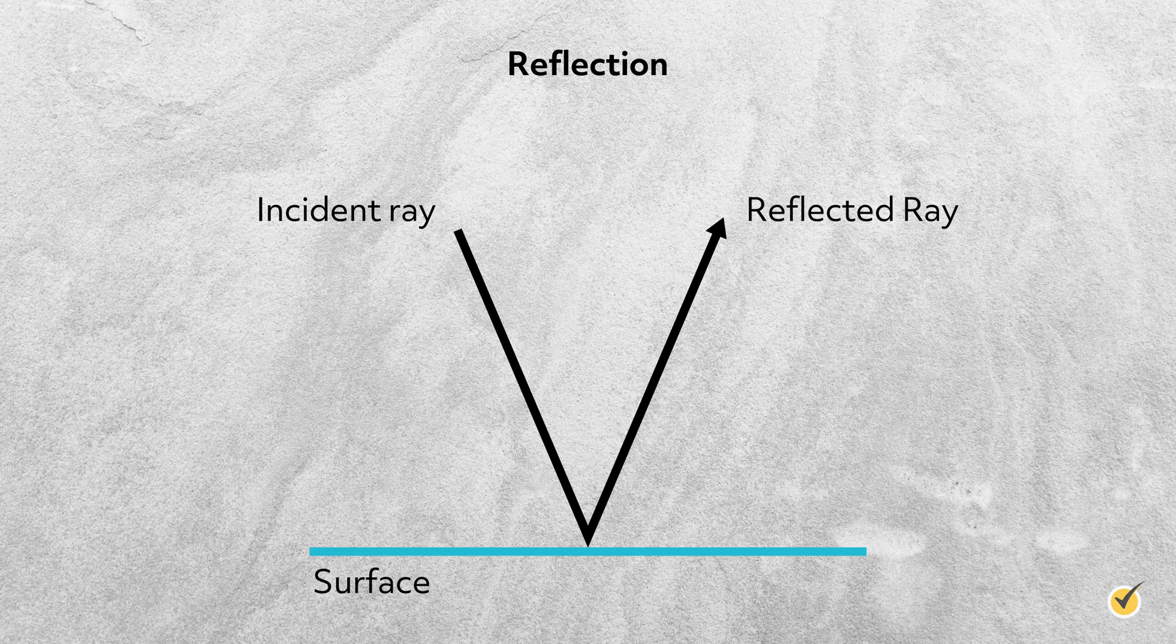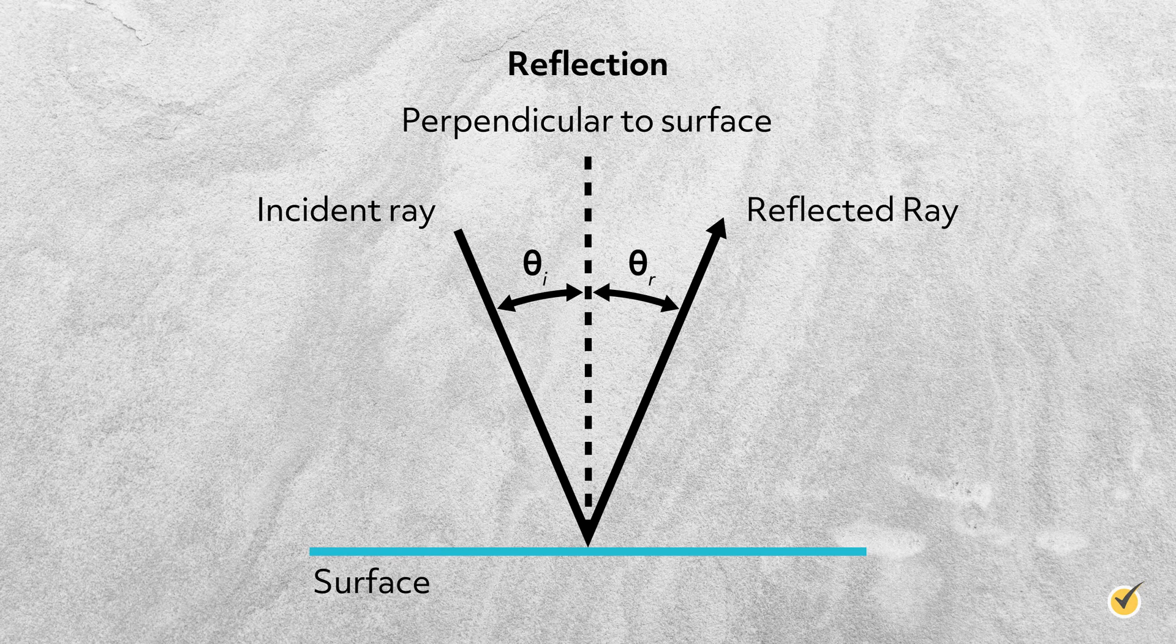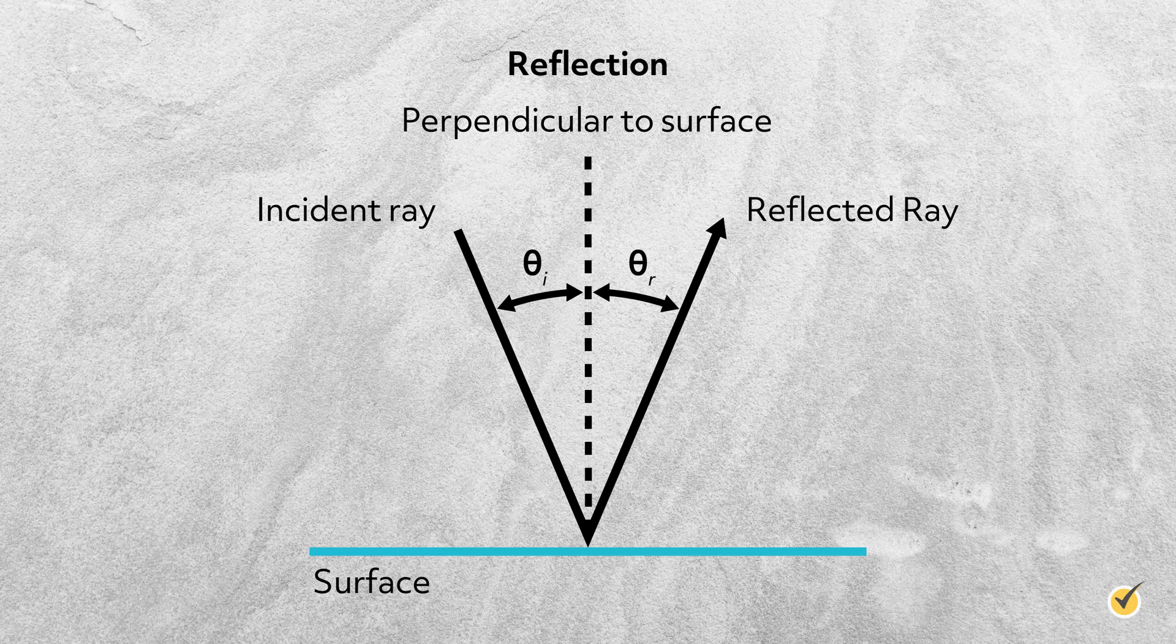What this means is that the angle of the incident ray measured from a line perpendicular to the surface will always be the same angle as the reflected ray, measured from that perpendicular line. This is the same way a ball bounces off the rail in billiards. The ball will bounce off the rail at the same angle that it approached the rail.